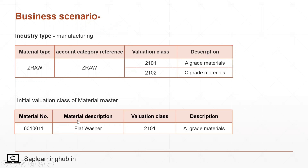The scenario is that one material master was created by an end user with valuation class 2101, and the material is a flat washer. This is a wrong valuation class because a flat washer belongs to C-grade materials, so the valuation class should be 2102. As per the scenario, we need to change the valuation class of this material master to C-grade materials.